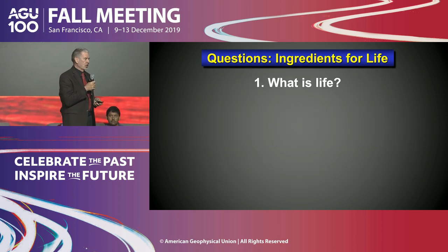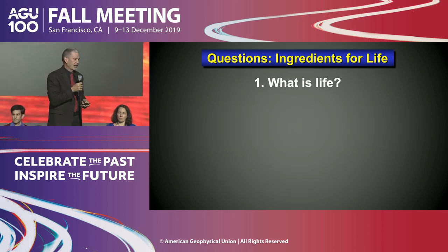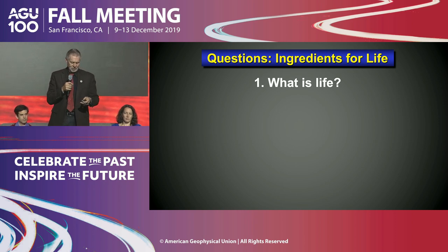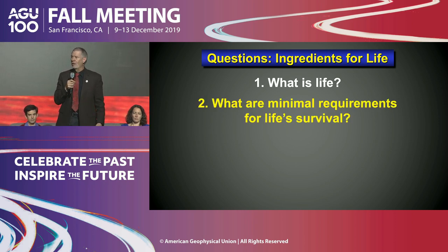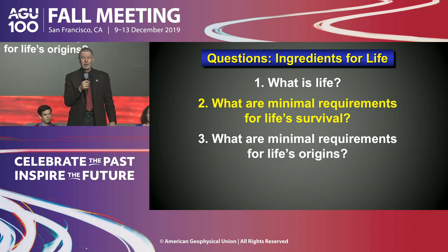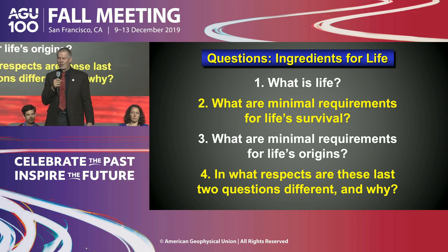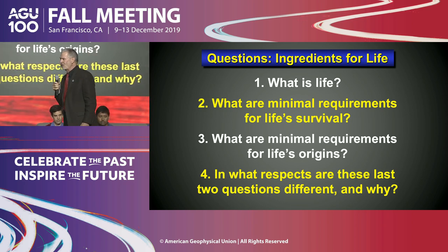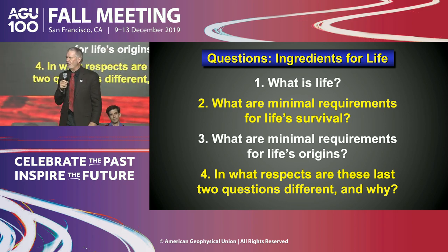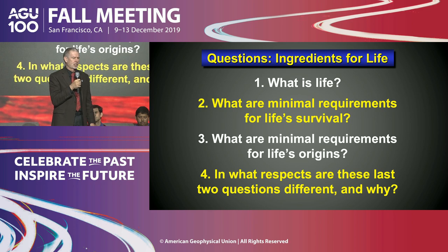In this most restrictive sense, regarding the origin of life, the ingredients for life must include a planet or moon with geochemical and geodynamic complexities. I have four questions: What is life? What are the minimum requirements for life's survival? What are the minimum requirements for life's origin? And in what respects are these last two questions different? I think they're very different questions, even though we sometimes conflate them.